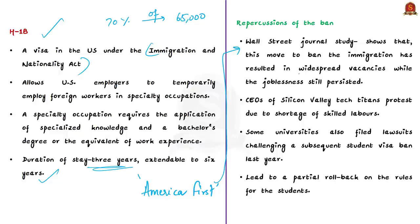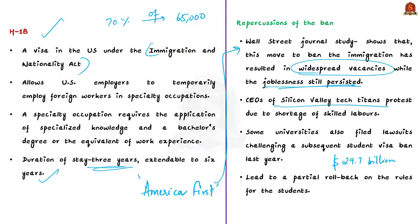Because of the ban, genuine questions were raised about its impact on the US-India relationship. The ban affected Indian IT services exported to USA — approximately 29.7 billion dollars in 2019, a 143 percent growth compared to 2009. Even Silicon Valley tech giants protested due to a shortage of skilled labor, and some universities filed lawsuits challenging a subsequent student visa ban. There was a growing realization in America about the need to match jobs with requisite talent.